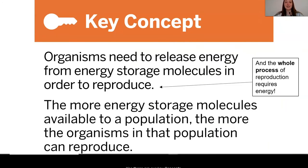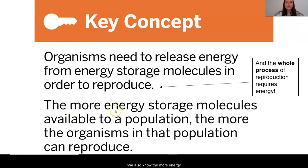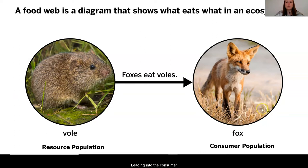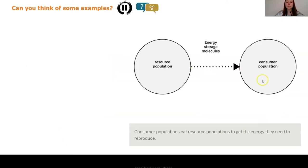Those are our key concepts. Organisms need to release energy from energy storage molecules in order to reproduce — it's the whole process, from finding a mate, to protecting eggs, to actually giving birth. All of this requires energy. The more energy storage molecules available to a population, the more the organisms in that population can and probably will reproduce. We also saw that a food web diagram shows what is eating what in an ecosystem, with the resource population feeding into the consumer population — for example, foxes eat voles.